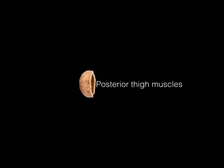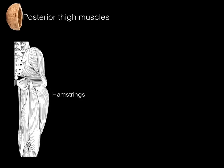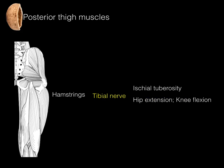Posterior thigh muscles in a nutshell: the hamstring muscles — the posterior thigh muscles — are innervated by the tibial nerve, arise from the ischial tuberosity, and cross the back of the hip and the back of the knee. By doing so, they cause hip extension and knee flexion.